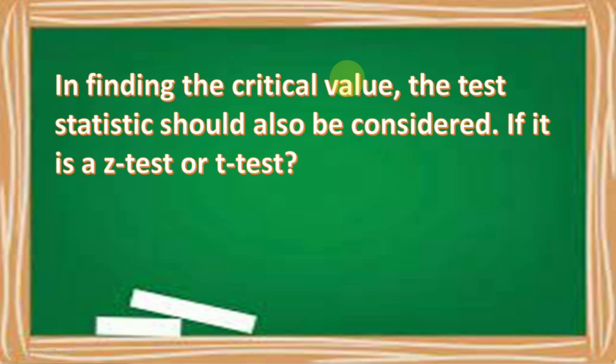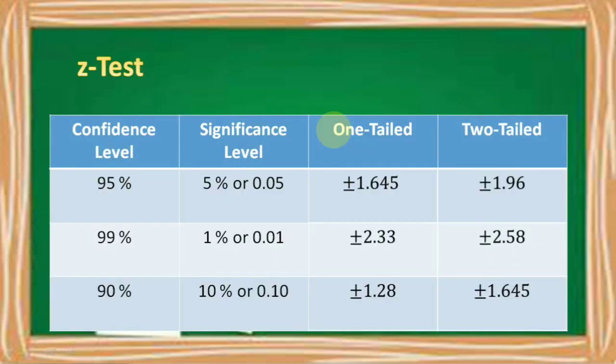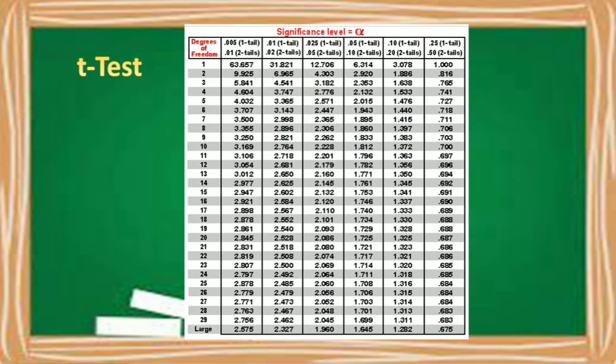In finding the critical value, the test statistic should also be considered — whether it is a Z-test or T-test. For a Z-test, this will be the table to be used. And for the T-test, here is the table.